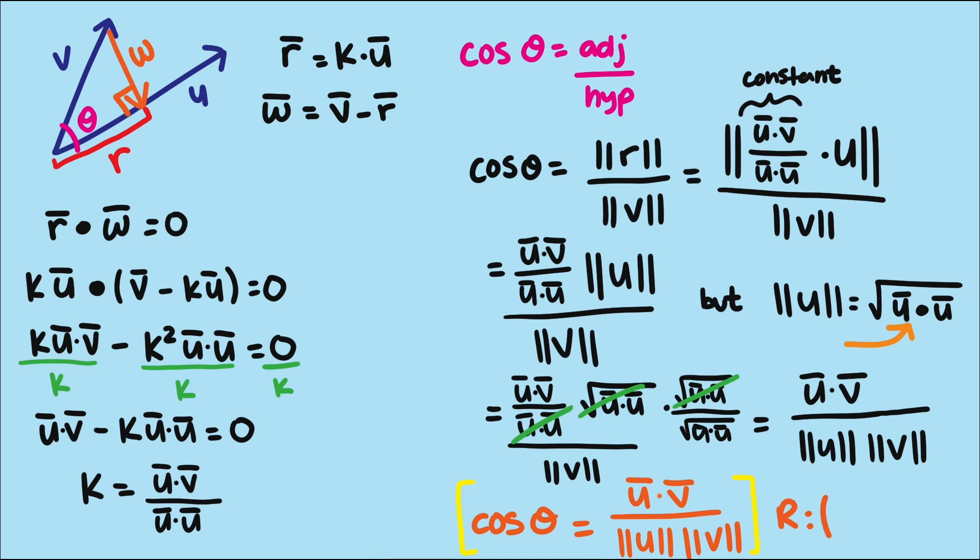1 is a perfect match, 0 is perpendicular, and negative 1 is the worst match because it represents two vectors going in opposite directions.